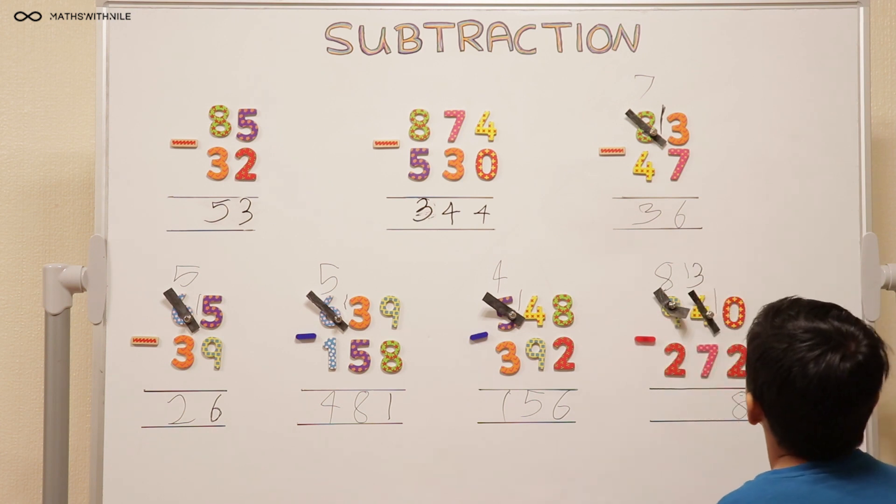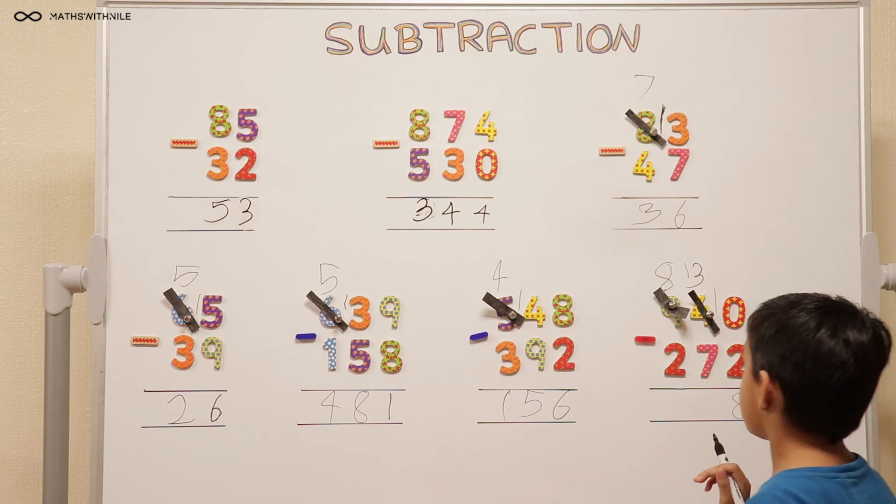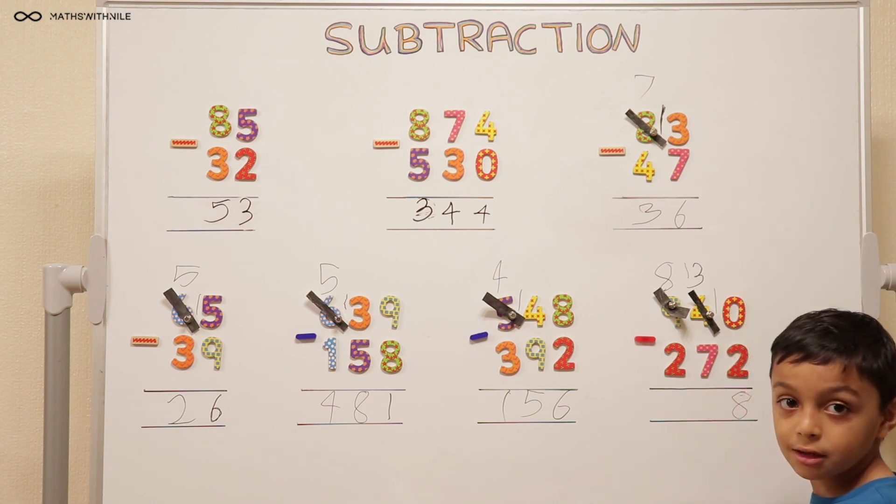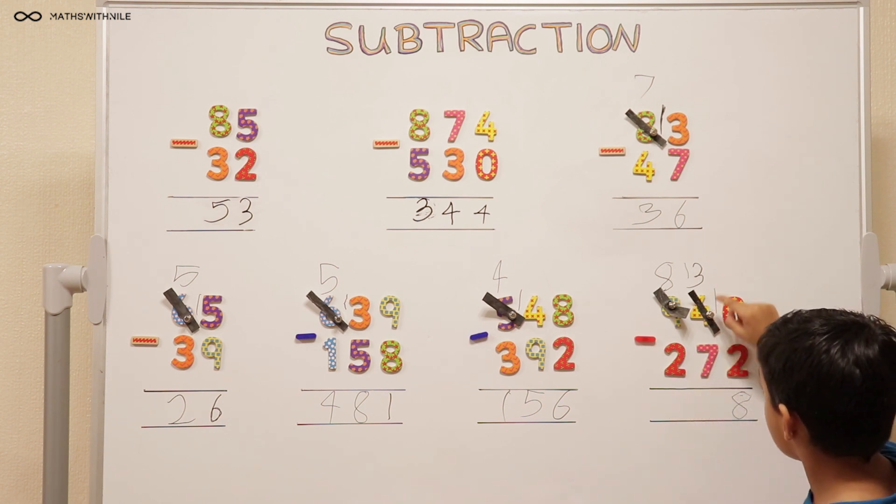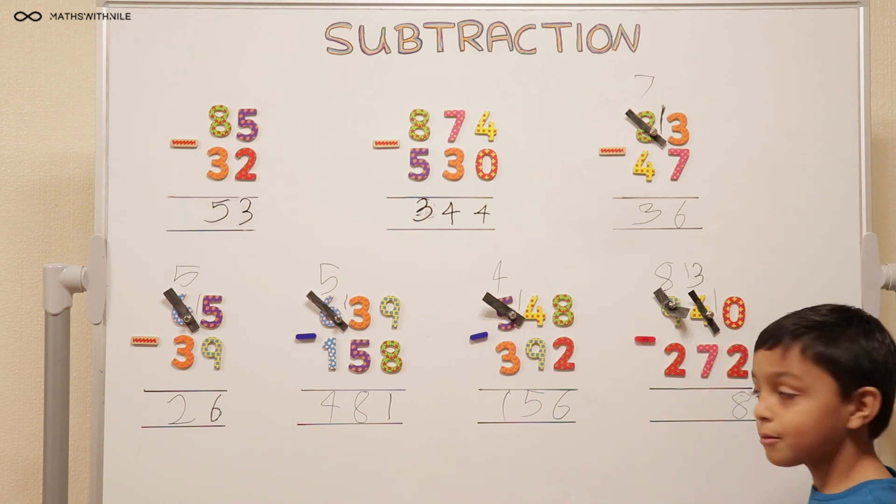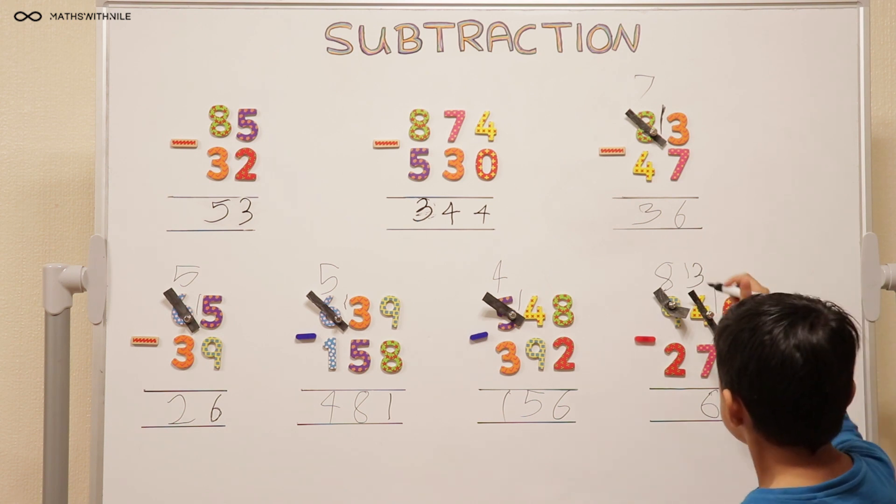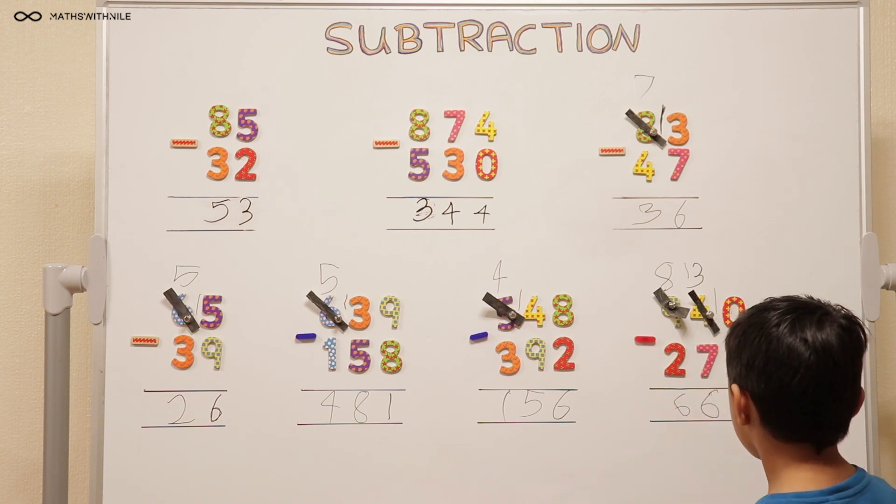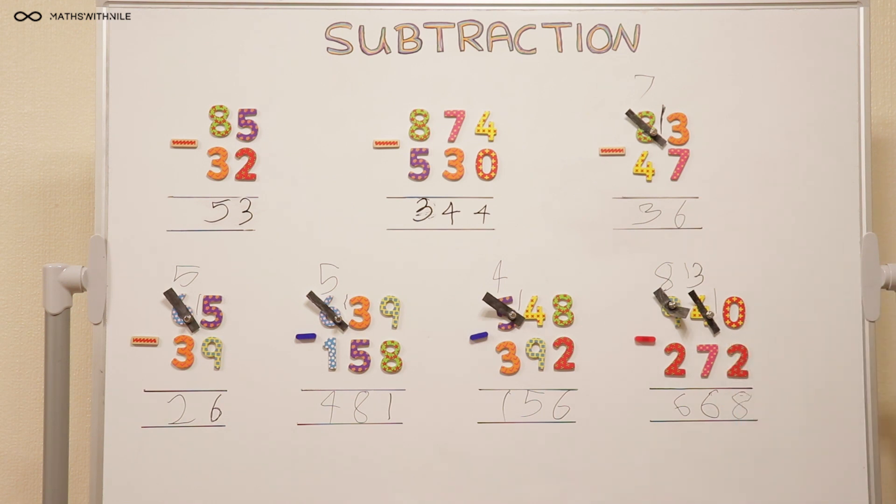Next to the 3. So what do we have next? 13 take away 7. Well, 7 double 7 equals 14. So we take 1 away from 14 and it equals 13. So it will be 6. Very good, Niall. And then 8 take away 2 equals 6. 668. Let's have a look and make sure it's correct. You think it is?